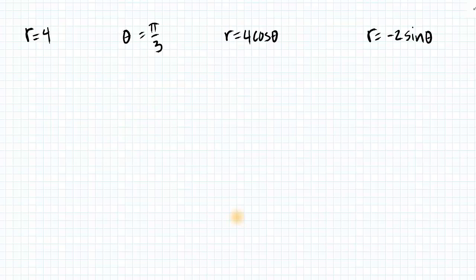Let's take a look at some polar equations and polar graphs. The first one, r equals 4, has no theta in it, which the implication there is that theta can be anything.